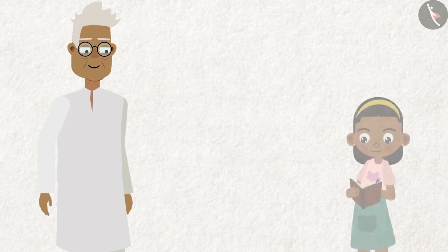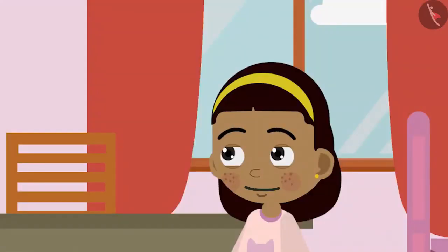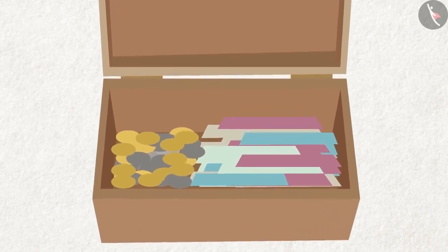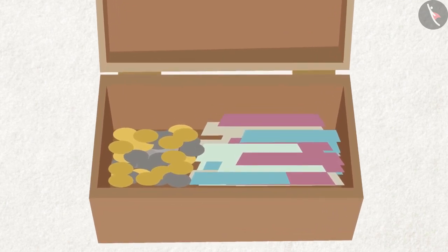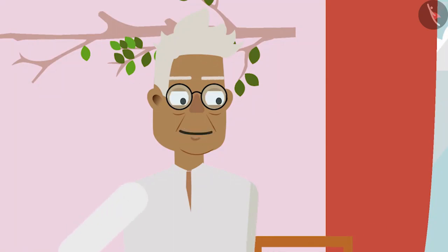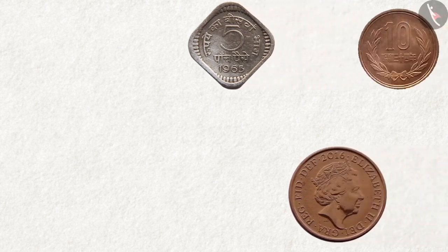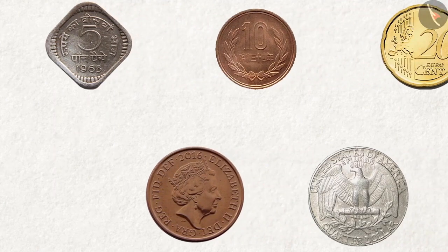Zia finishes her table with grandpa's help. She then says, 'Grandpa, I now know about these notes, but can you tell me about these coins?' Grandpa agrees: 'Definitely, Zia. I will show you the coins one by one and you try to tell me how much each coin is worth. You also look at these coins along with Zia and try to guess their worth.'